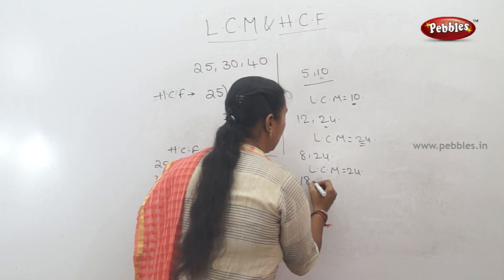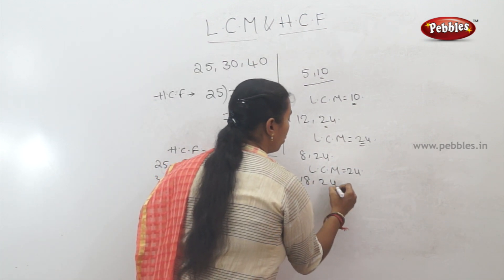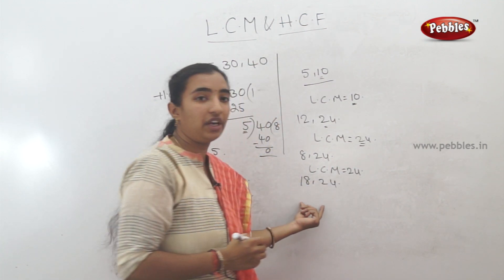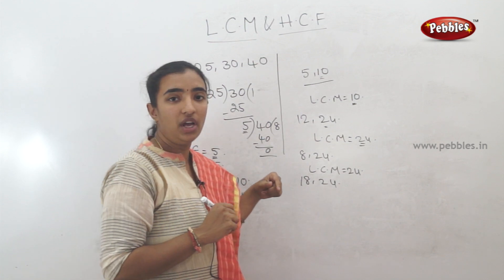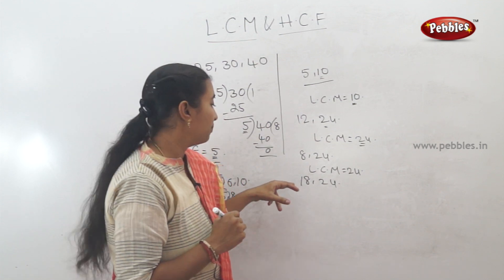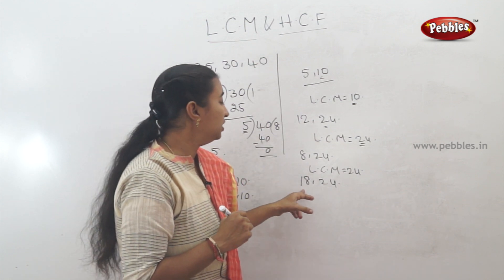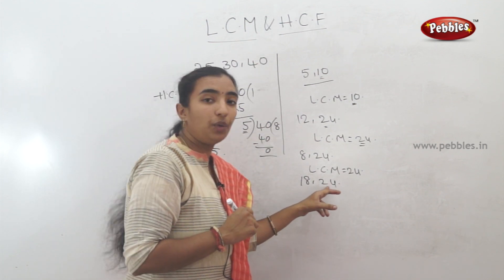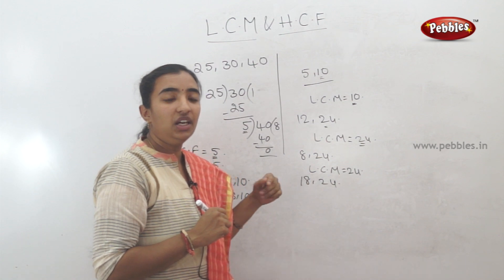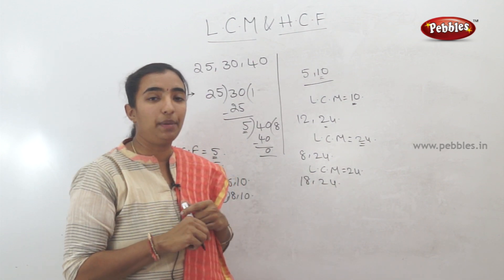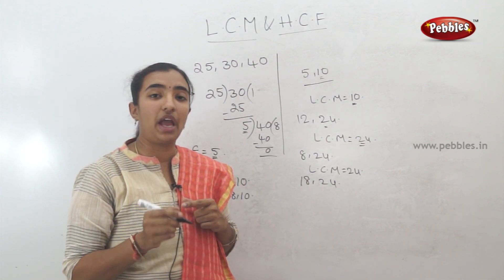Suppose you have 18 and 24. Find the LCM. We will use this method. For 18 and 24, we need to find the LCM.